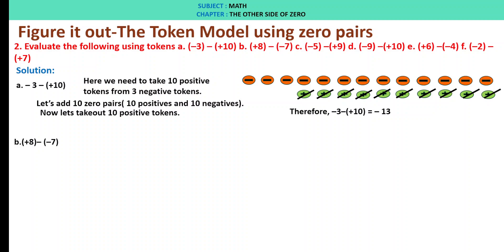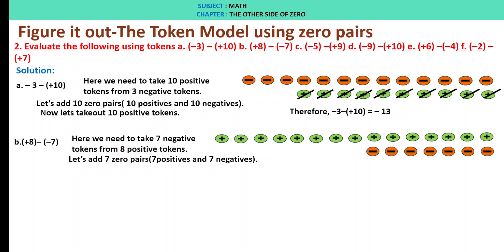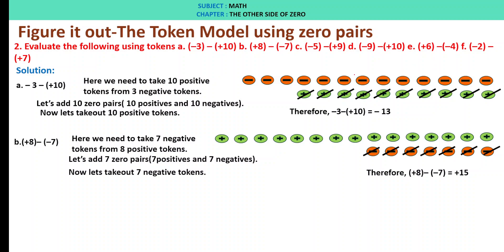B: plus 8 minus of minus 7. We have plus 8 and need to take out 7 negative tokens, but only positives are there. So let us add 7 zero pairs. Upon adding the 7 zero pairs, we take out 7 negative tokens. We are left with 15 positive tokens. Therefore, plus 8 minus of minus 7 is plus 15.